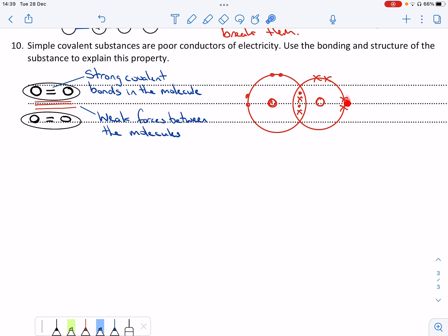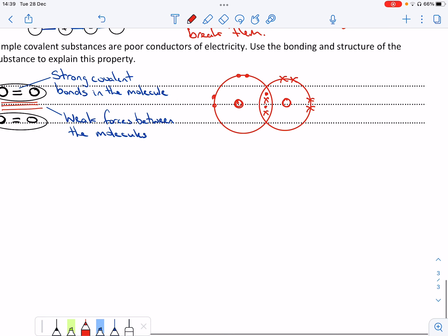There's no ions here, it has to be electrons. And the electrons are all being used in bonding, so they're not free to move.